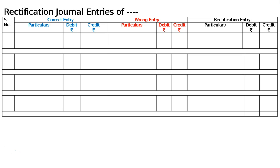First of all, the first one is: the total of the sales book has not been posted to the sales account. The total of the sales book was not posted to sales account in the credit. That is, debtor to sales — say 100. It was not posted to the sales account. Debtors account debited, but in sales account there is no posting.